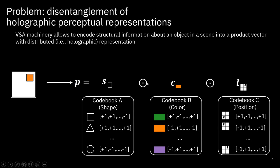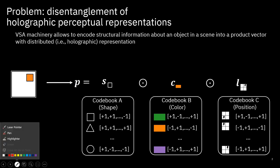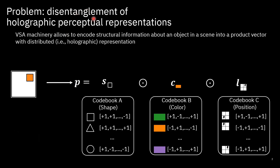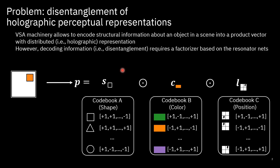The problem we are actually interested in is called disentanglement — it's the inverse operation. When we are given the product vector, how do we get back the original attribute vectors in their original form? This process we call the decoding process, and it can be done using what we call a factorizer. The resonator network, which was introduced a few years back, is a very nice machinery which can do this.